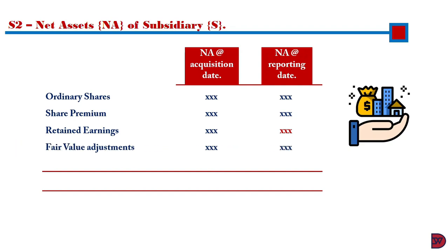Then you bring fair value adjustment, as discussed in the episode with the link above. The figure was totally omitted, so adjust the figure at acquisition and put the same figure at reporting date. Then lastly, unrealized profit — if the subsidiary is the seller. It wasn't done at the date of acquisition, so it is nil. It was done during the period, so it reflects in the figure at the reporting date.